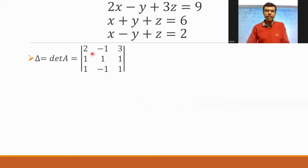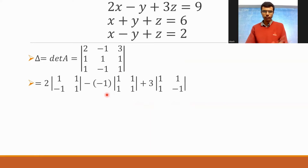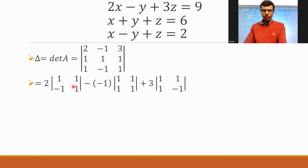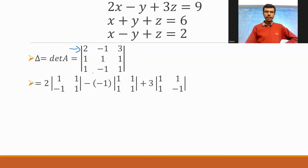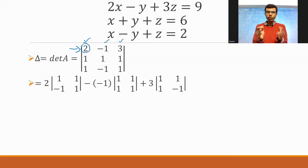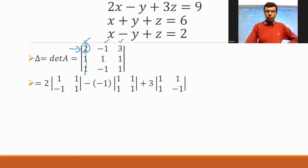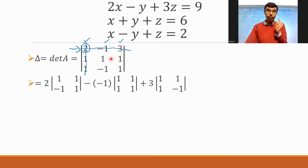Listen carefully. I'm going to expand my determinant along row 1. There are three elements in row 1: 2, minus 1, and 3. My first element is 2, so 2 into — now, to get the sub-determinant, you need to strike off the row and column in which 2 is there. What you're left with is 1, 1, minus 1, 1. So that's why I'm getting 2 into det(1, 1, minus 1, 1).